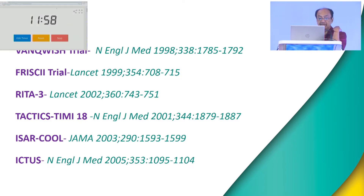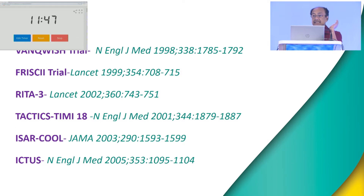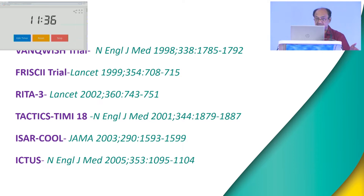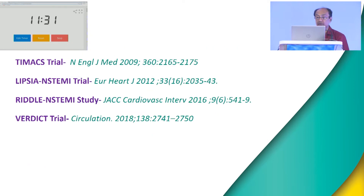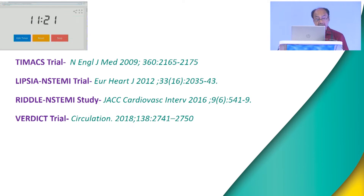What does the data say? The VANQUISH trial, FRICK trial, RITA-3 trial, TACTICS-TIMI trial, ICTUS trial — these trials were done on non-ST elevation myocardial infarction before 2010, and they gave contradictory results. Since the publication of the VANQUISH trial in 1998, the controversy started: whether the patient with NSTEMI should go for early invasive procedure or delayed invasive procedure remains uncertain. But nowadays, important trials have been published — particularly the TIMEX trial and the VERDICT trial. Most conclusions drawn in ESC and ACC guidelines are taken from either the TIMEX or VERDICT trial.